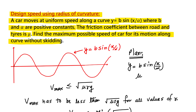Now let us plan this problem. What are the things that are given? This curve is given and the equation of this curve is y = b sin(x/α), and the friction coefficient between road and tyre is given. Basically you have your car moving here. The friction coefficient between tyre and road is μ. We have to find the maximum design speed.